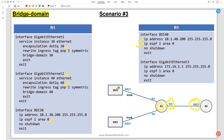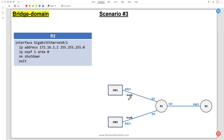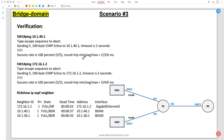On R2, we simply configure the IP and OSPF. For verification: pinging from Switch 1 to Switch 2 (10.1.40.1) is successful. Pinging from Switch 1 to R2 is also successful. On R1, 'show ip ospf neighbor' confirms all neighbor states are in Full state, and you can see the BDI interfaces where OSPF was enabled.